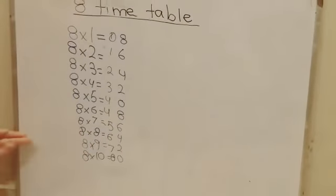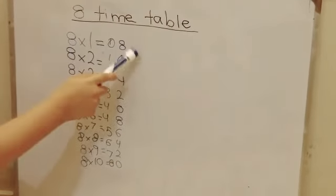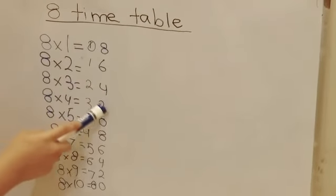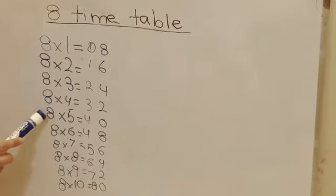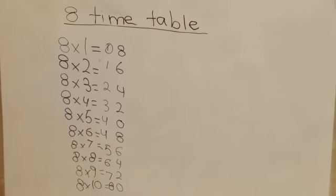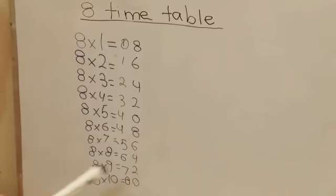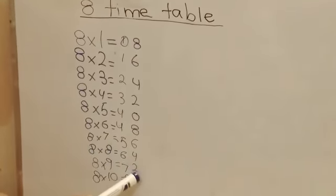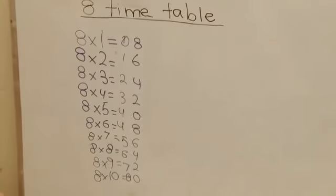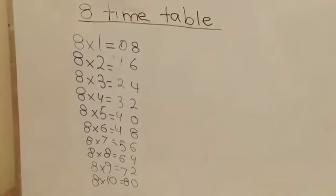So here we have our 8 times table. Let's repeat this once again: 8×1=8, 8×2=16, 8×3=24, 8×4=32, 8×5=40, 8×6=48, 8×7=56, 8×8=64, 8×9=72, 8×10=80. That's all for my today's video and bye bye.